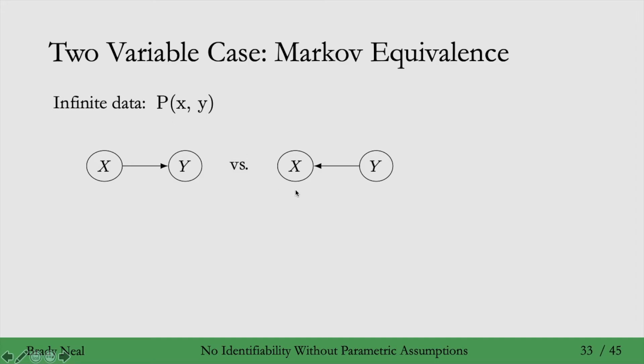Is our data generated by a graph where Y is generated as a function of X? Or is our data generated by data where X is generated as a function of Y? Which causal graph is it? Can we infer that from this infinite data that we have?